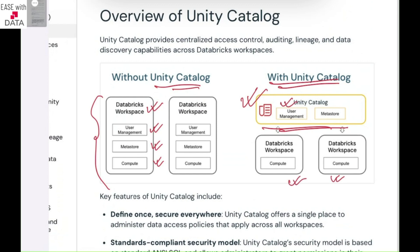You have already seen the user management and metastore that we are using at the account level. Once you can manage them at account level, you can enable or disable them for each of the workspaces from a central place. And this is the benefit of Unity Catalog.